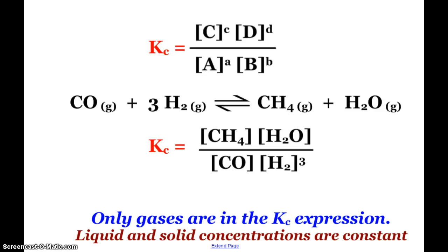the concentration of methane times the concentration of water vapor divided by the concentration of carbon monoxide times the concentration of hydrogen cubed because of the fact that we have a 3 in the balanced equation. Now we'll note right now that only gases are in our Kc expression. Liquid and solid concentrations are constant, so they're not going to be in these expressions.